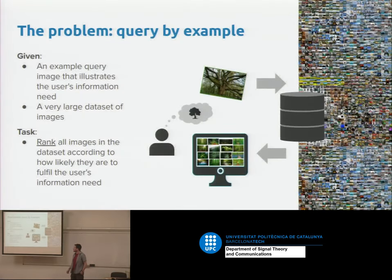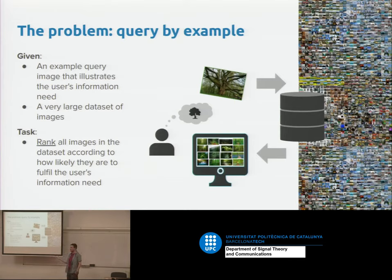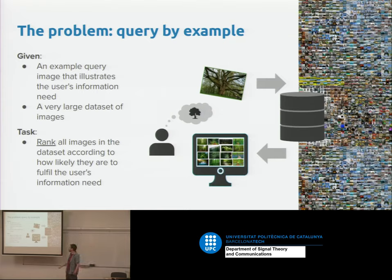So this is the problem setup. You have some information need — something in your head that you want — and you can find an example of something like what you want, but maybe it's not exactly what you want. You'd like to find similar things in a large dataset of images. For example, a search engine company doing reverse image search would take an image, rank the whole dataset by score, and return the top hundred or two hundred results.